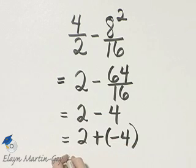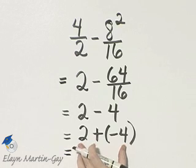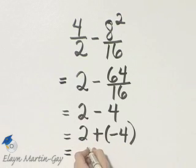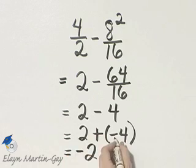And then how do I add two numbers with different signs? I subtract their absolute values. 4 minus 2 is 2, and I keep the sign of the number with a larger absolute value. That is negative, so the result is negative 2.